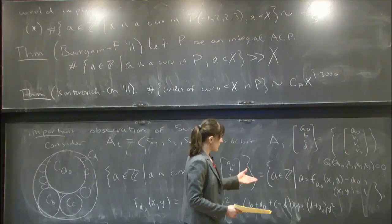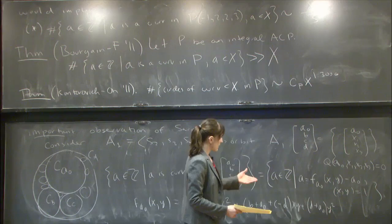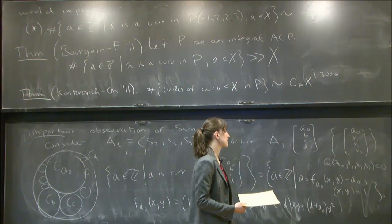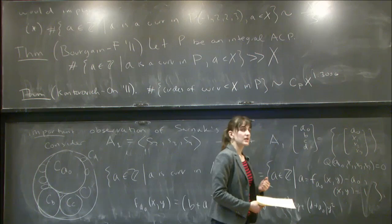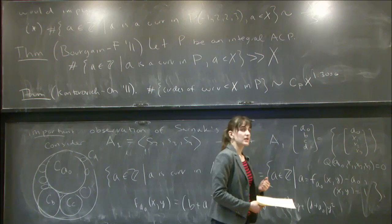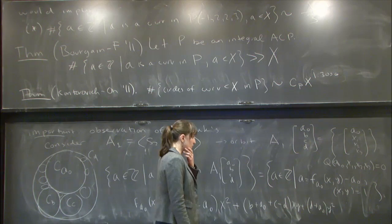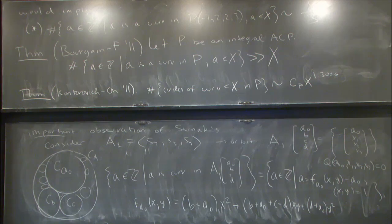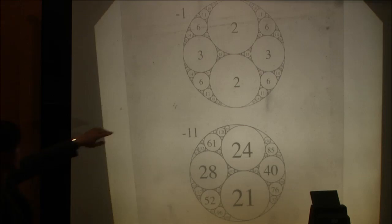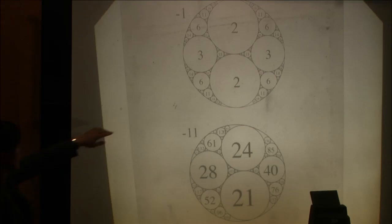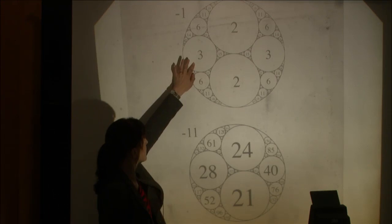One consequence of this observation is that, since the packing contains all integers represented by even just one such binary quadratic form shifted by A₀, there are infinitely many primes among the curvatures. Furthermore, there are infinitely many pairs of circles of prime curvature that are tangent to each other — take any circle of prime curvature, look at all circles tangent to it, and infinitely many of those will also have prime curvature. Note that the same is not true for triples: in any triple of mutually tangent circles, at least one has even curvature.